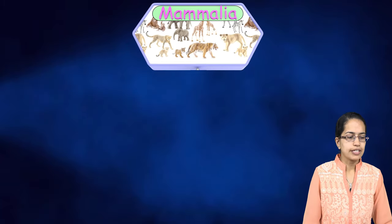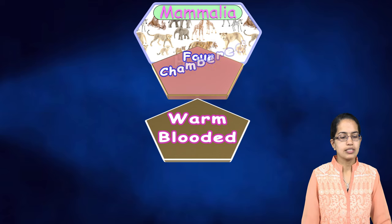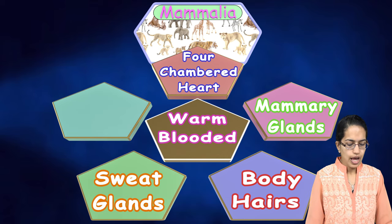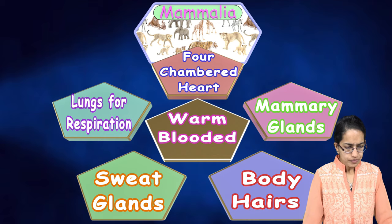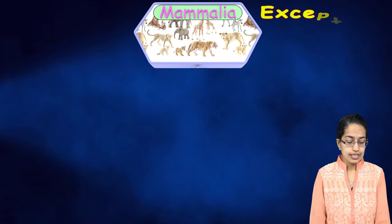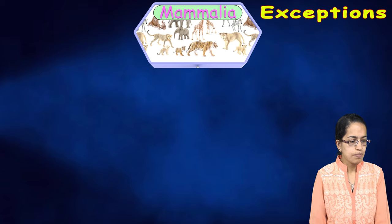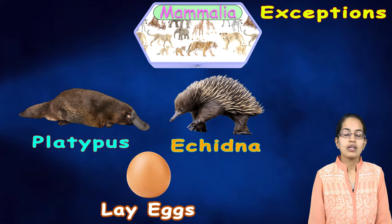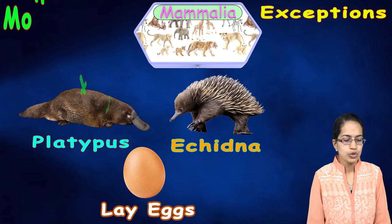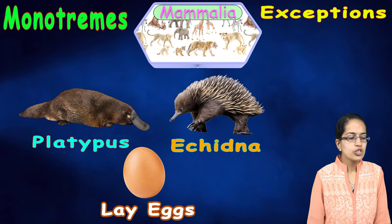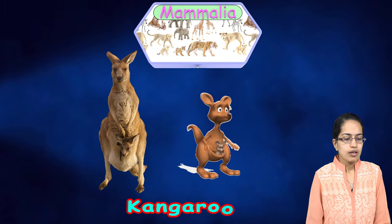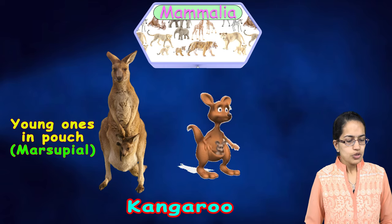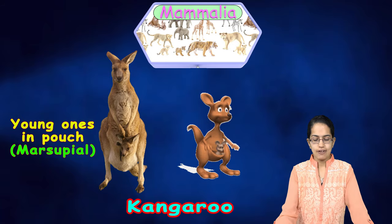Mammals are warm-blooded with four-chambered hearts. They have mammary glands, hair, sweat glands, and lungs. Good exceptions exist: platypus and echidna are mammals that lay eggs — these are known as monotremes. Certain mammals like kangaroo have very weak young ones, which is why they keep them in pouches — these are another interesting classification within mammals.